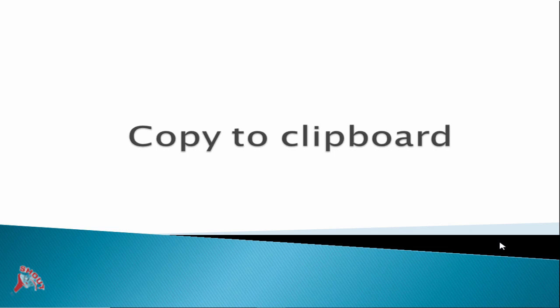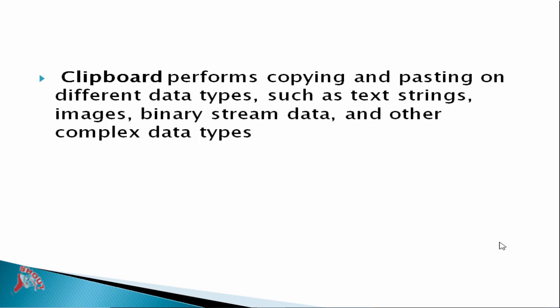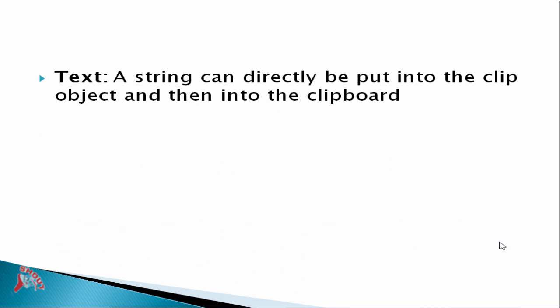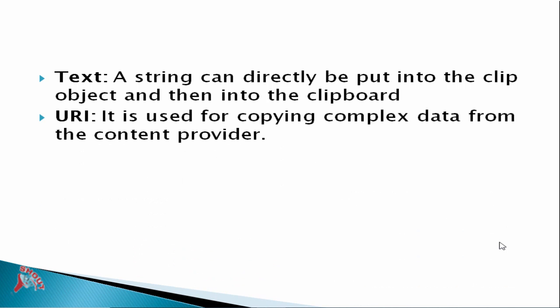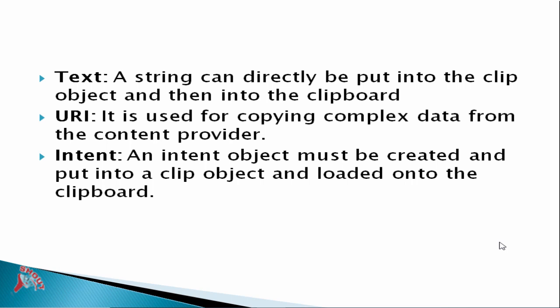Welcome to another tutorial. Copy to Clipboard performs copying and pasting on different data types such as text strings, images, binary string data, and other complex data types. For text, a string can directly be put into the clip object and then into the clipboard. For text URI, it is used for copying complex data from the content provider — a URI object can be put into a clip object and loaded into the clipboard. For intent, an intent object must be created and put into the clip object and loaded into the clipboard.